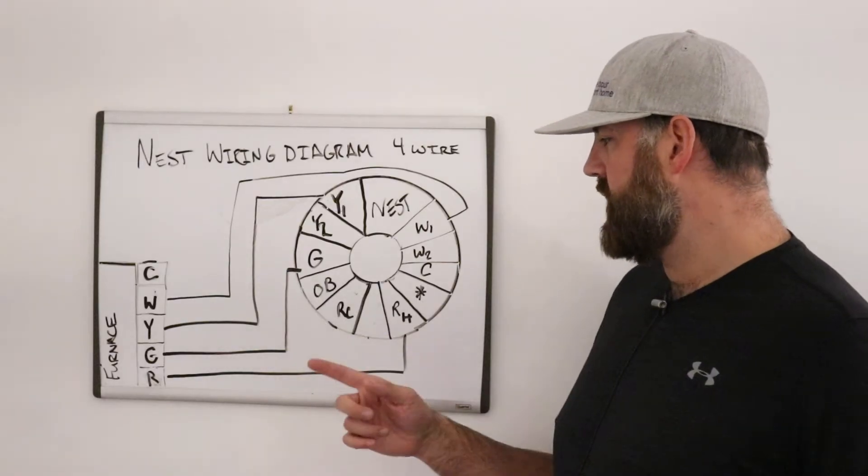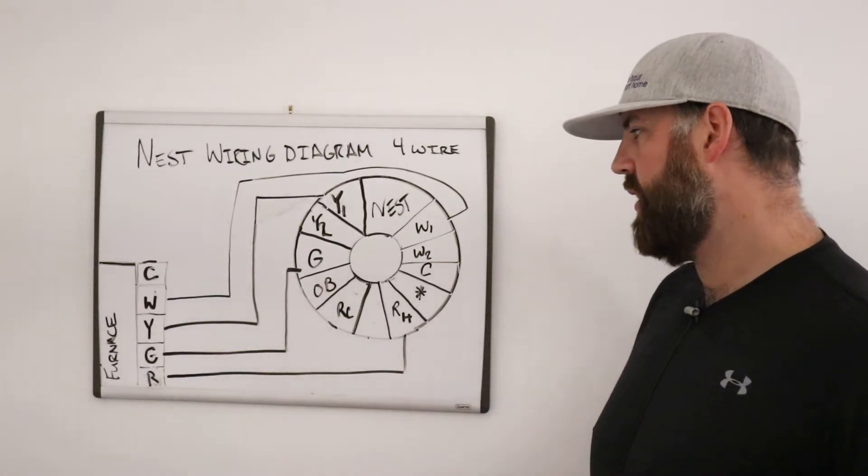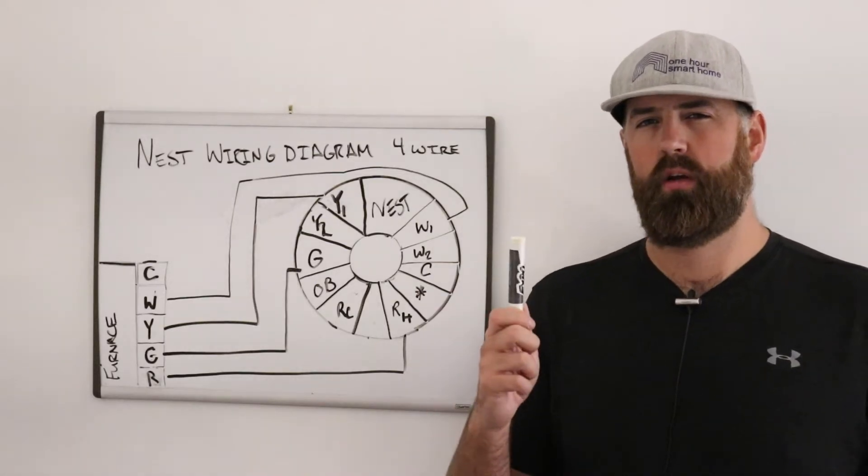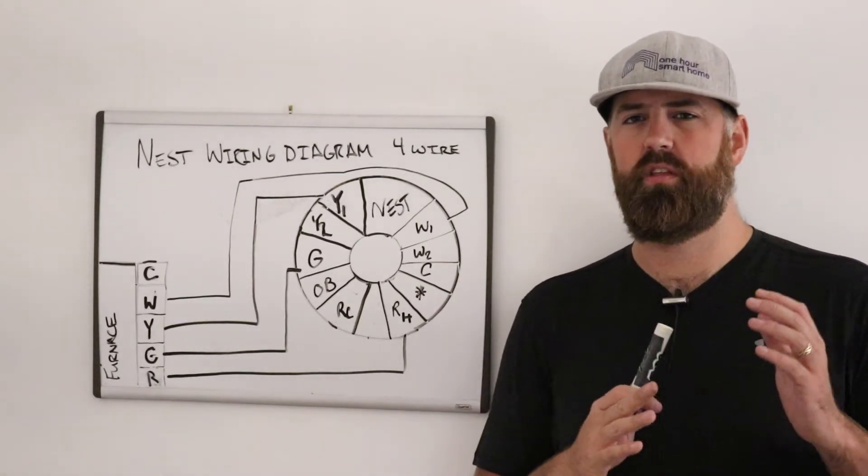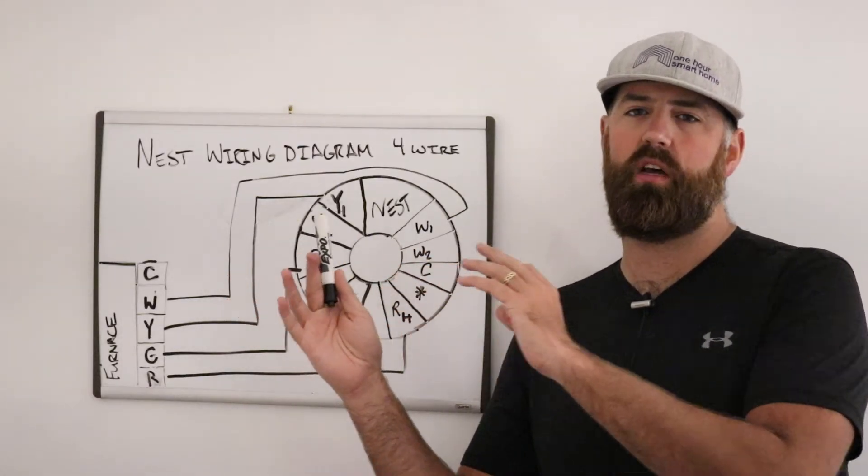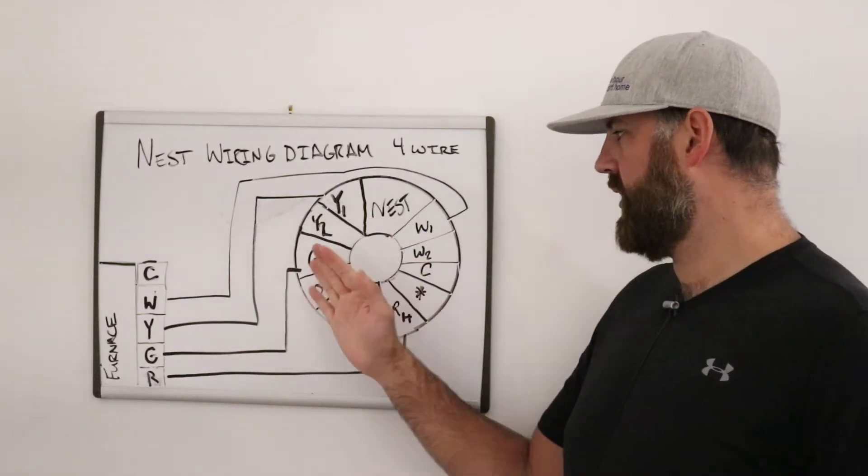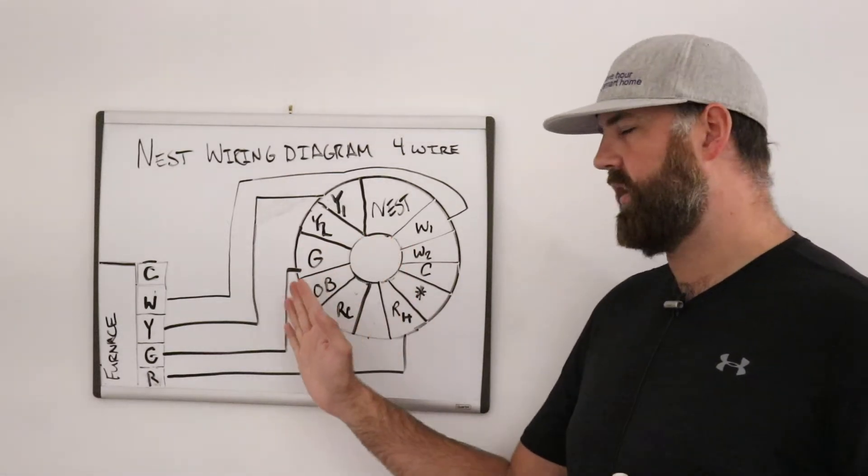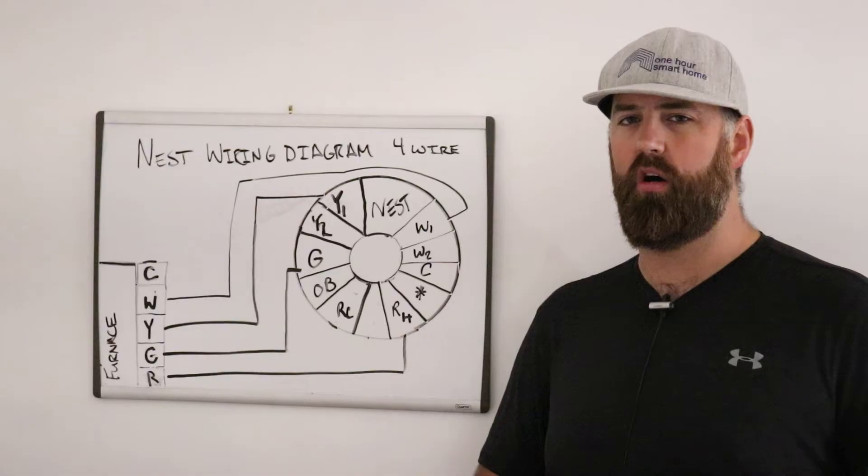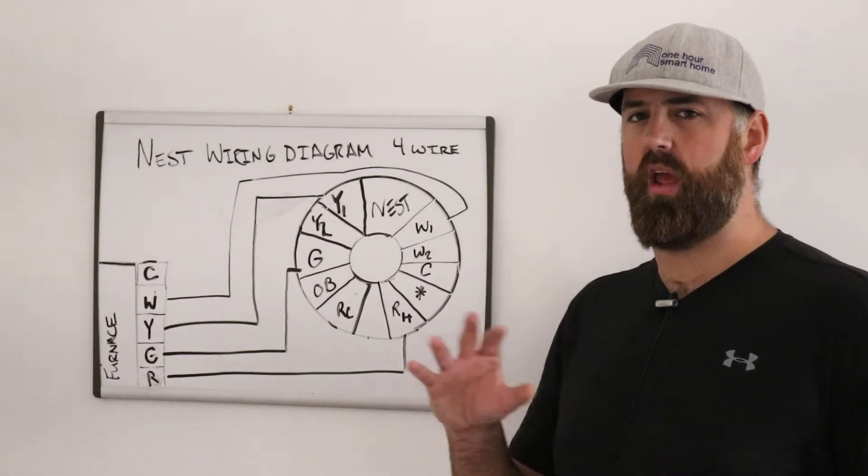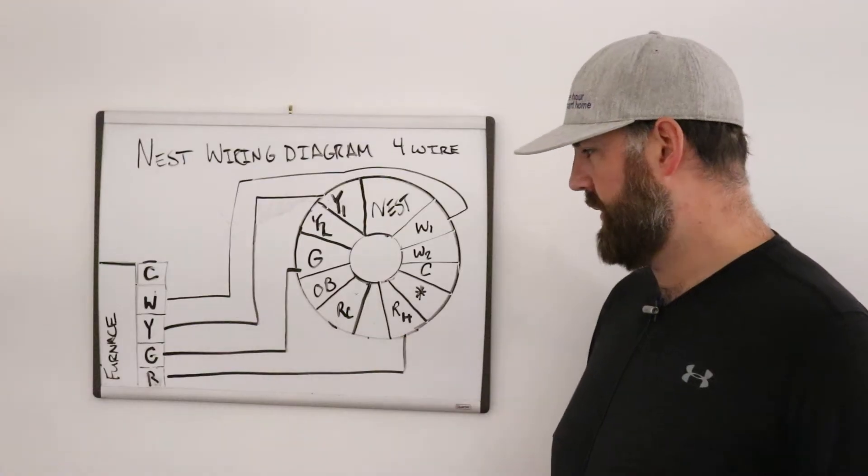Then, you've got OB, which is used for a heat pump. And that is what's called a reversing valve because heat pumps basically work on the principle of either removing heat from your home or transferring heat from the outside into your home. Because most four wire systems do not use a heat pump, I'm not going to cover that. We do have another video on heat pump wiring, which you can search for one hour smart home and heat pump wiring.